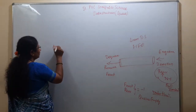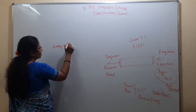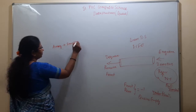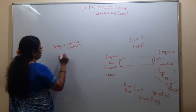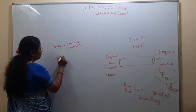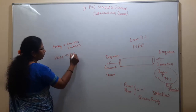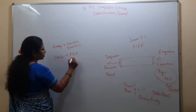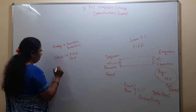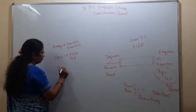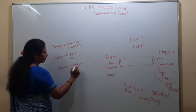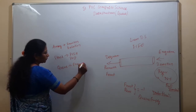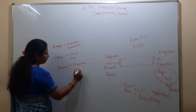In an array, it is directly insertion and deletion. In a stack, insertion is called push and deletion is called pop. In the queue, insertion is called enqueue and deletion is called dequeue.